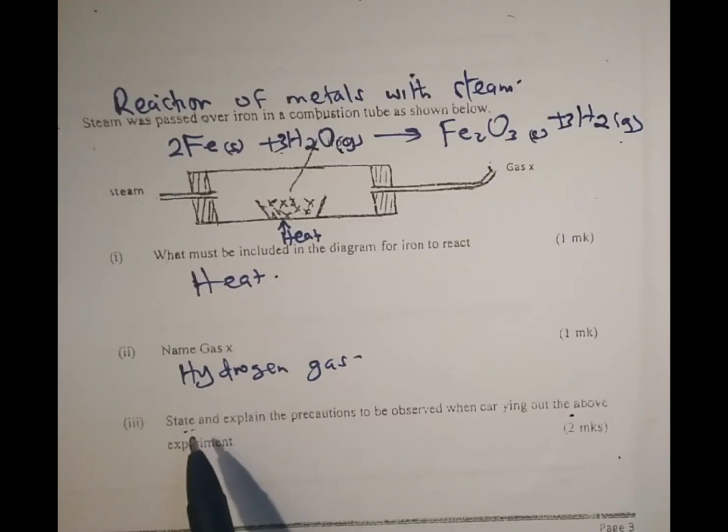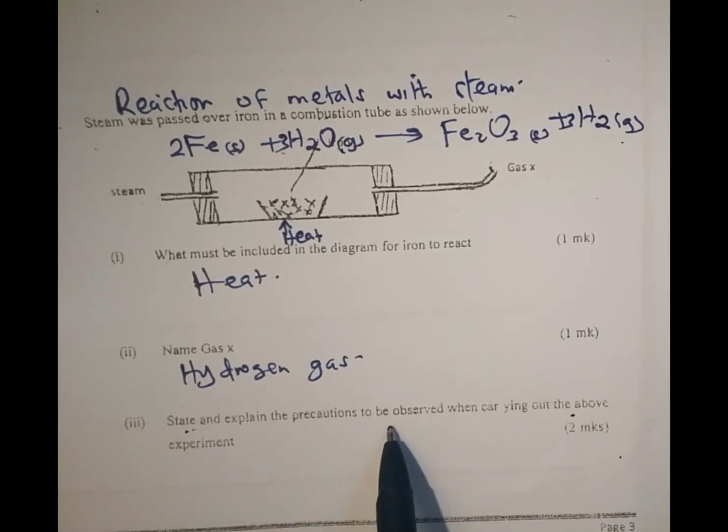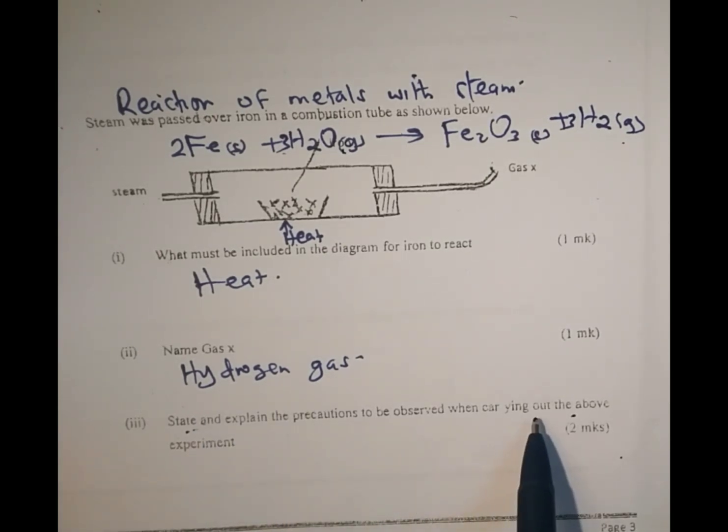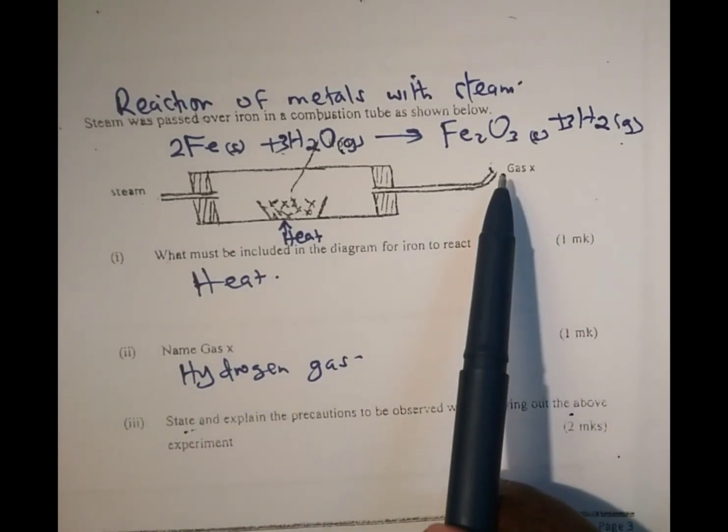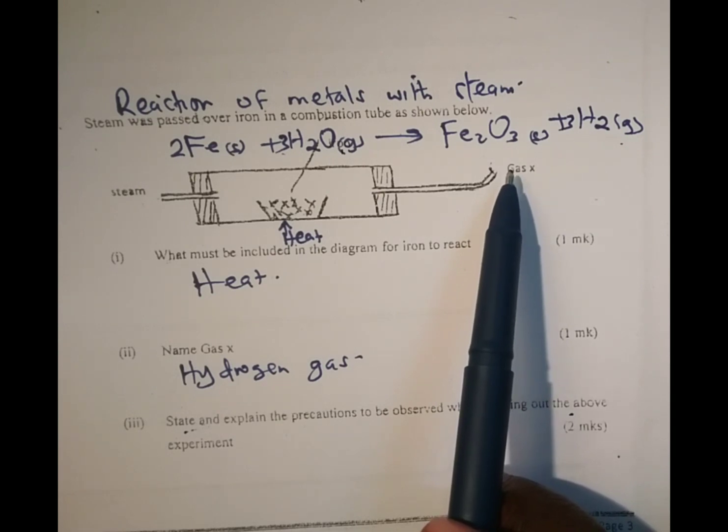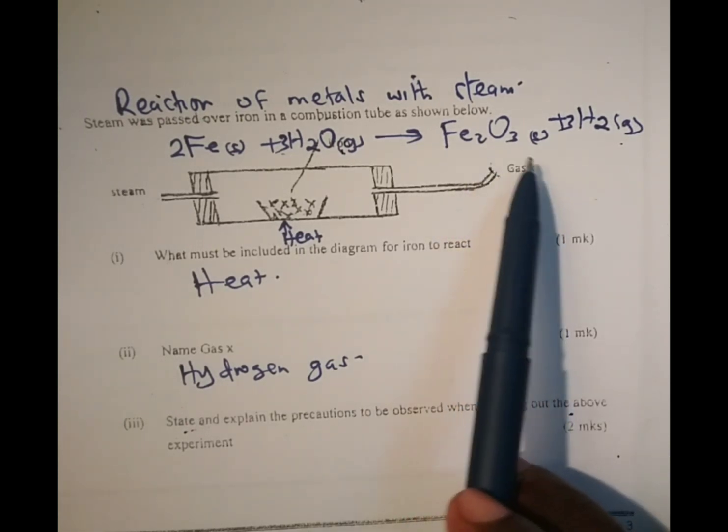Roman 3 state and explain the precautions to be observed when carrying out the above experiment. One of the precautions is that the hydrogen gas produced should not be burnt at the jet because if it mixes with air, the reaction is explosive.